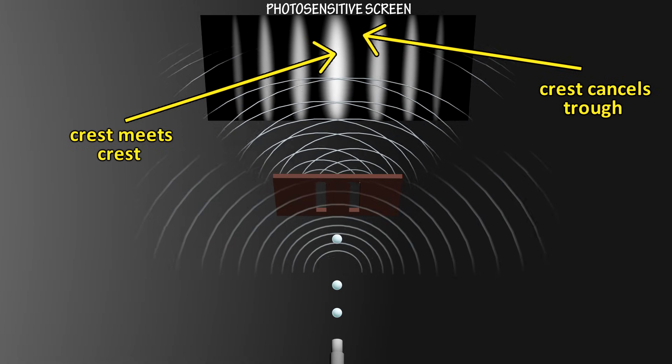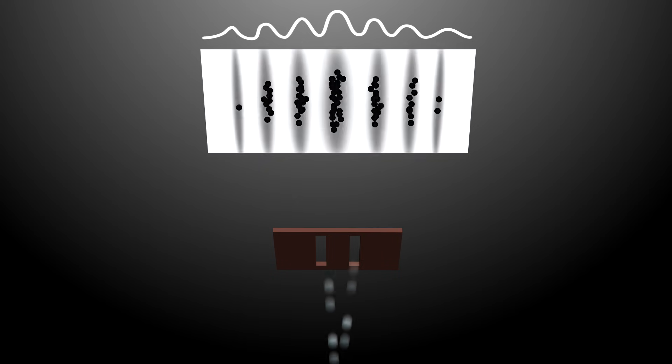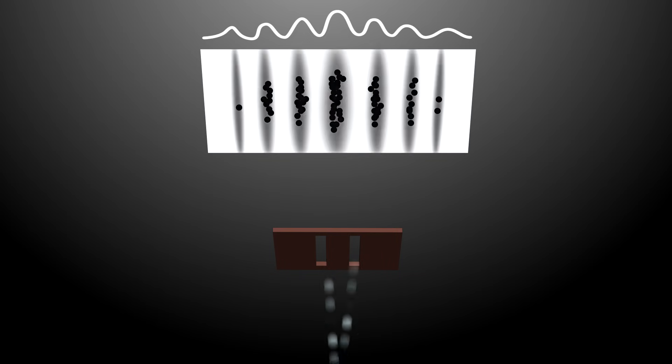Now, what if we lower the intensity of the light and keep lowering it until our light source emits only one photon at a time? Surely this should not create a wave pattern. When we shoot one photon at a time, it forms a dot on the screen. But if you fire enough of them — thousands or millions of photons — what you find is that collectively the photons form the same interference pattern. So somehow the photon either interacts with itself, or is somehow able to communicate its part in the interference pattern when fired one at a time.